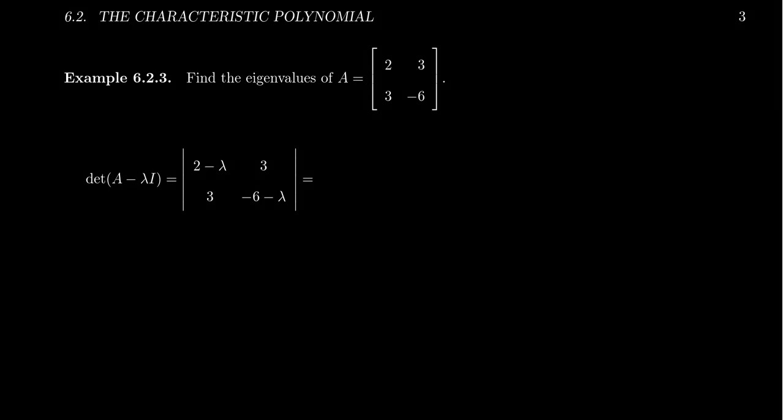We are again in section 6.2, the characteristic polynomial of the textbook, linear algebra done openly. And what I want to do is find the eigenvalues of a square matrix. It's two by two, so it's not so bad.